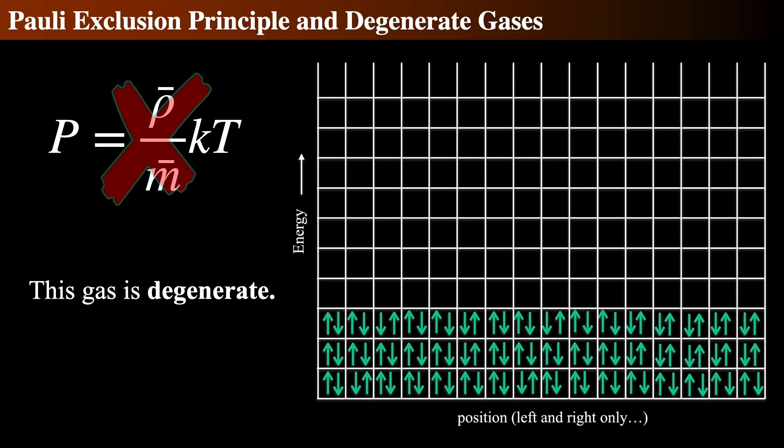As the temperature drops, the lowest energy states start to fill up. Because fermions in the same system cannot be in the same quantum state, that is, some combination of location, momentum, and spin, they begin to stack up. Some of these electrons retain a lot of energy, even though they've lost all they can. This is because there are no available lower energy states.